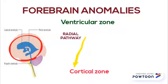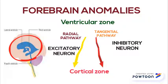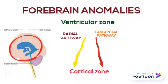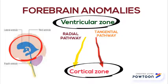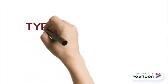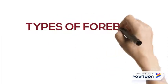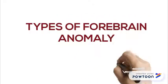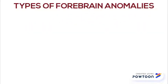In the migration of neurons from the ventricular zone to the cortical zone, the radial pathway is controlled by a secretory protein called Reelin. Now moving forward towards the types of forebrain anomalies.